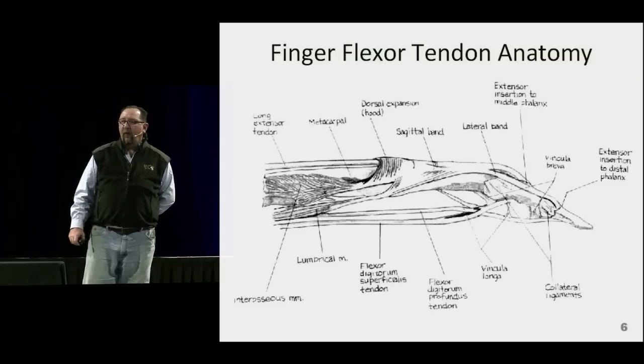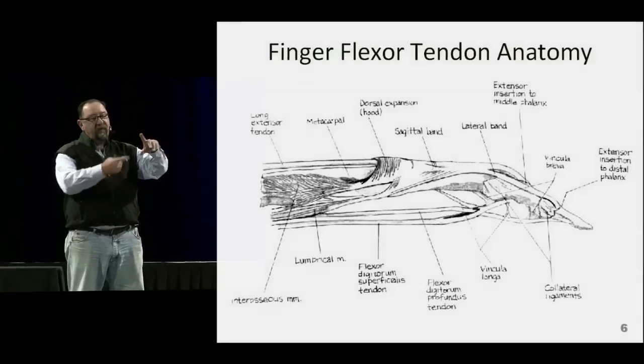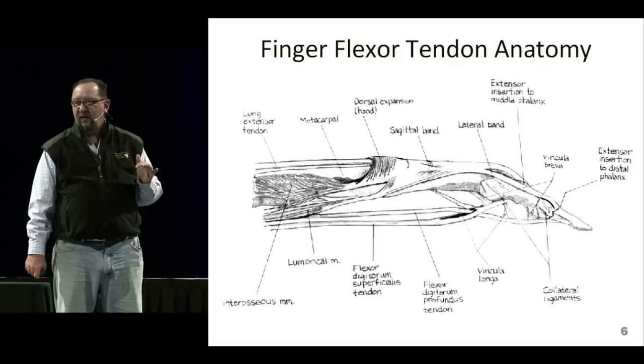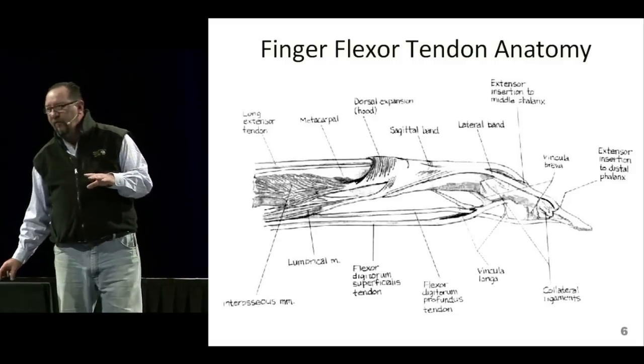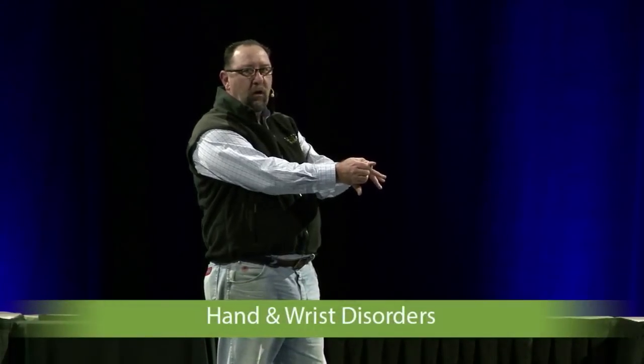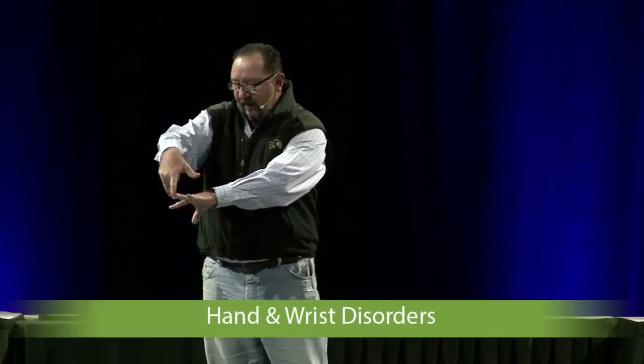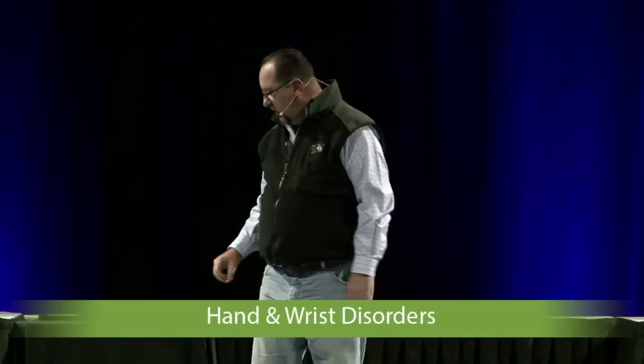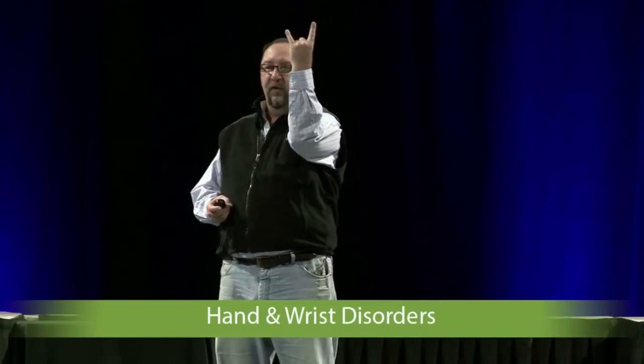For flexor tendons of the fingers, there are two, so if a person can flex their finger, it doesn't mean both are intact — it means one is intact. You have to examine them carefully. Hold the finger straight all the way to the end and ask them to flex just at the DIP — that's flexor digitorum profundus. Check-rein the other fingers and isolate the long finger — that's flexor digitorum superficialis. On the extensor side, there are also two for the index and small fingers, so the same principle applies.